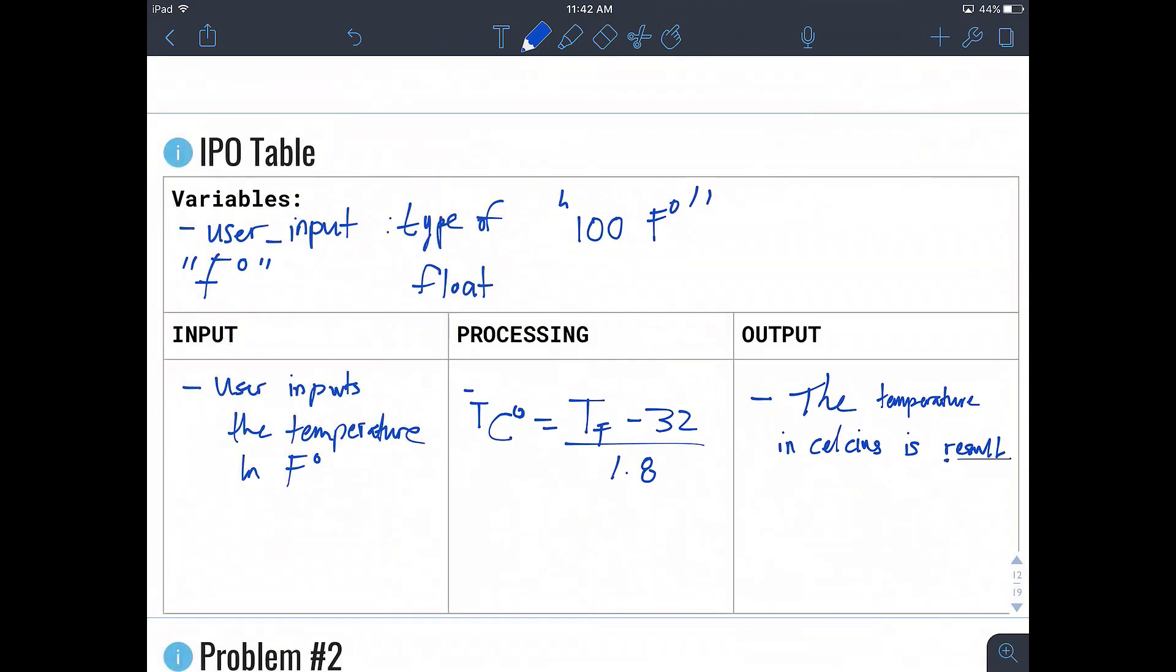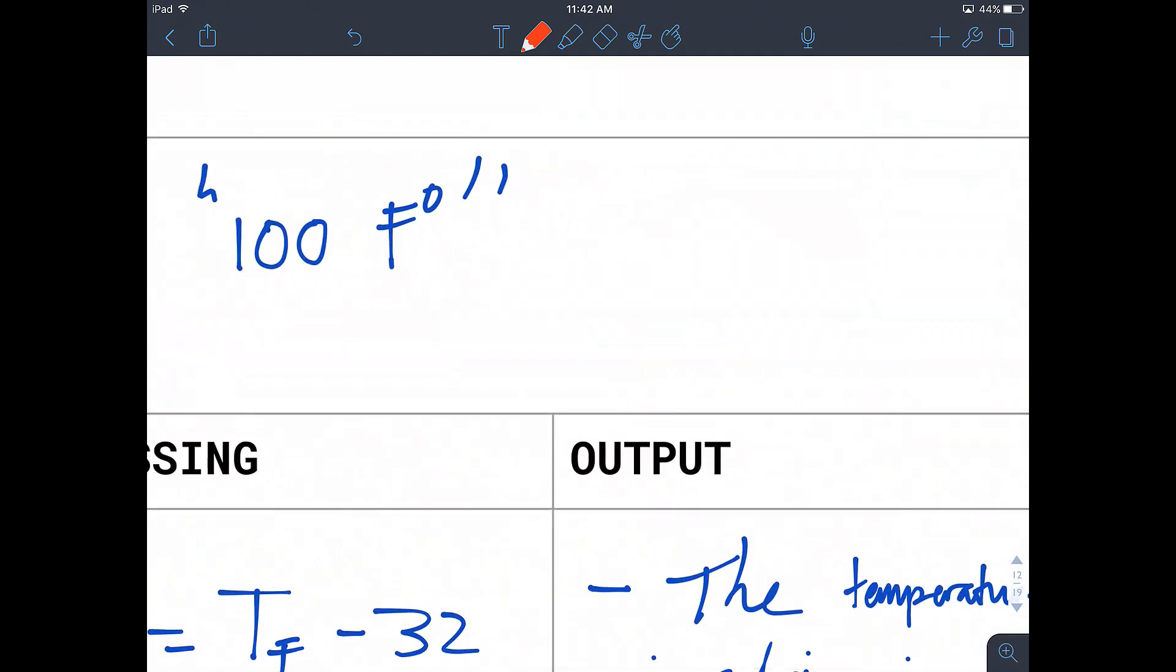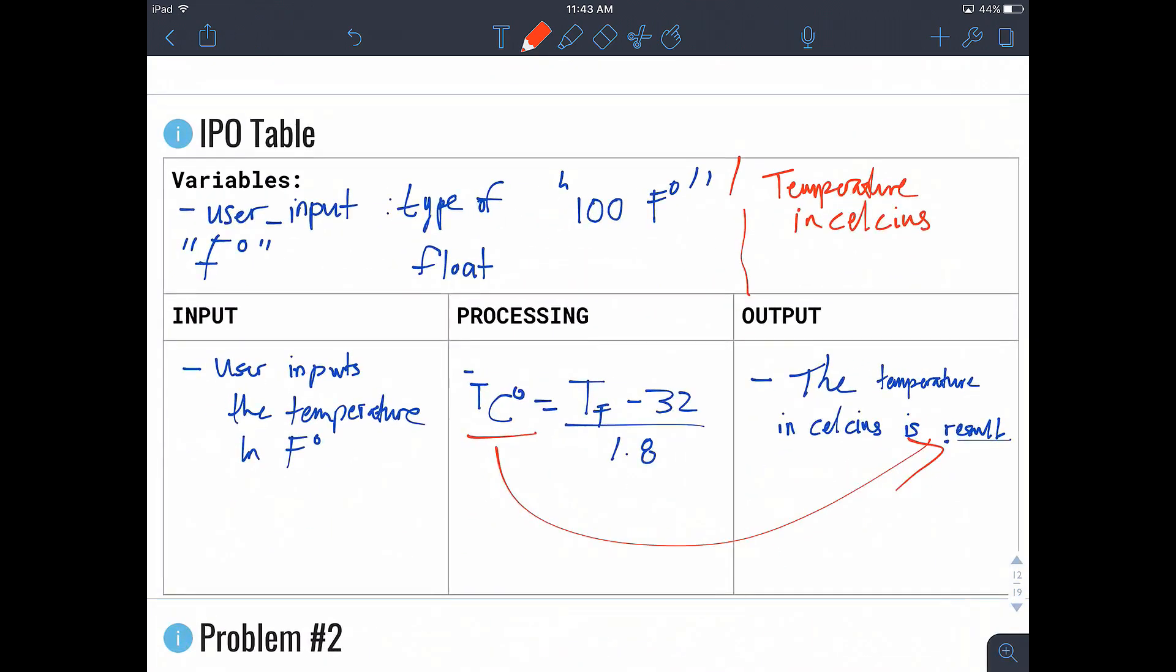So this is a very easy, simple solution where we can just bring our found results. So we might want another variable, temperature in Celsius, to hold the result. And that can be used as an output.